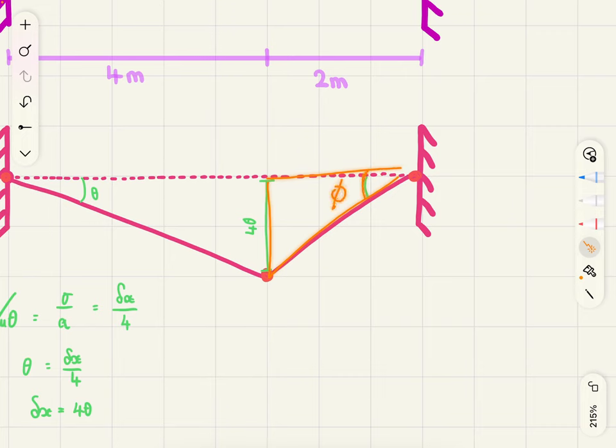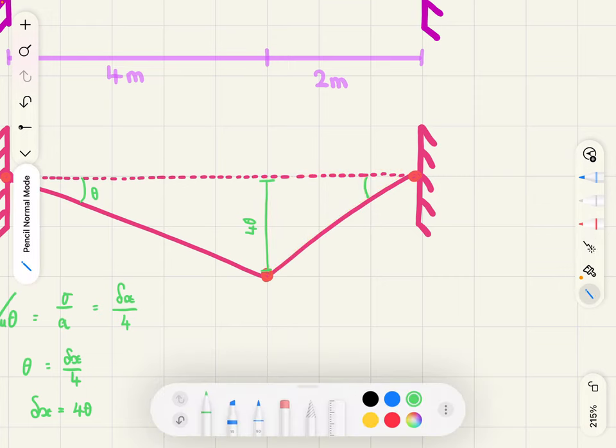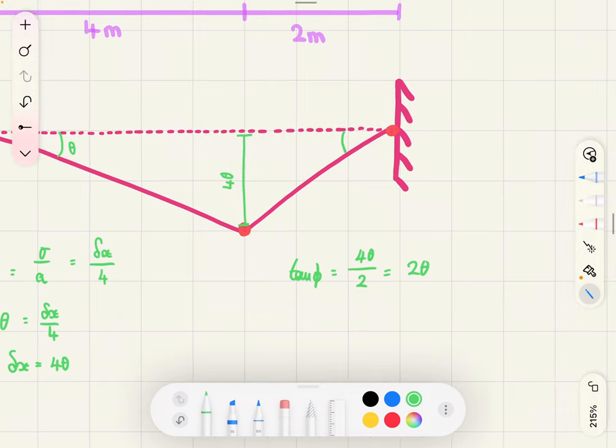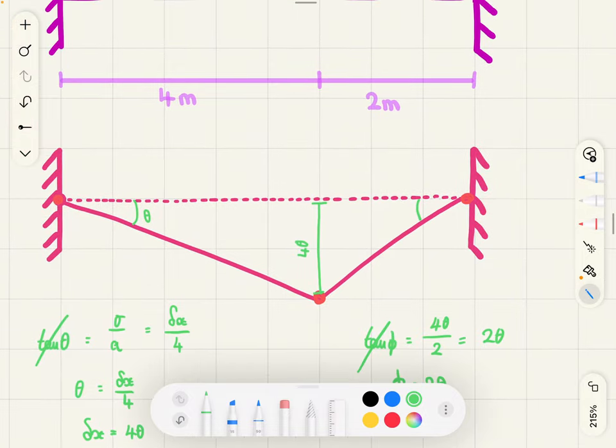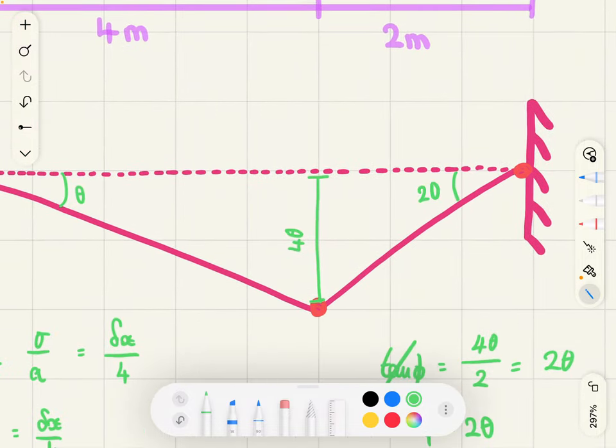So, tan phi is the opposite, so 4 theta over the adjacent 2. So, 2 theta, once again, assuming small angle approximations, we can just say that phi is 2 theta. So, this angle is 2 theta.